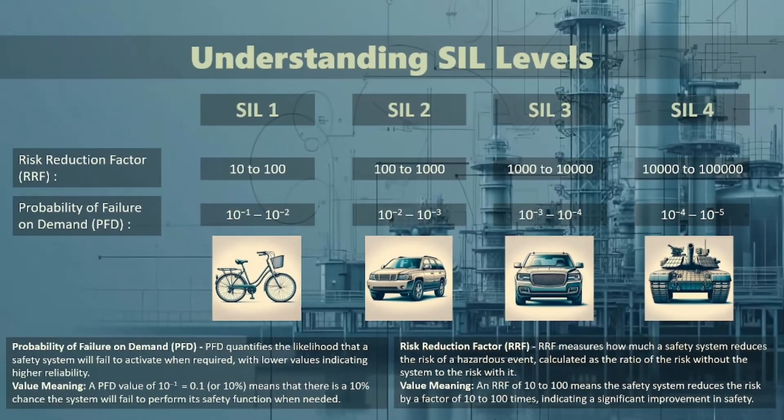SIL 1 is the entry-level safety, like a sturdy bicycle. It offers a risk reduction factor of 10 to 100, meaning it reduces risk by up to 90%. SIL 2 — think of this as your family car. It provides a moderate level of safety with an RRF of 100 to 1,000, reducing risk by up to 99.9%.